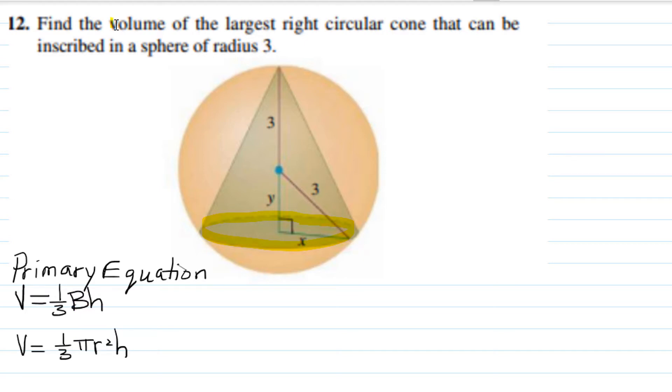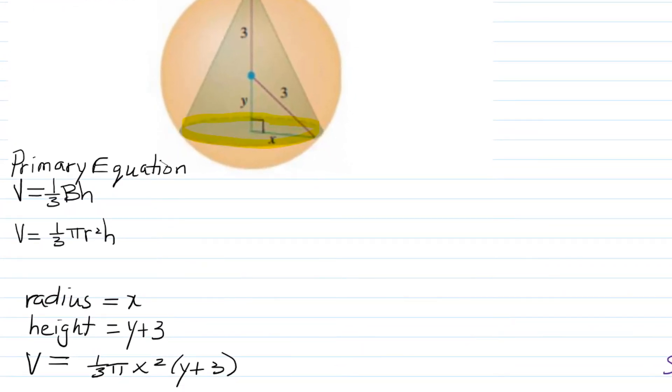Once you have your primary equation, you have to use other information in the problem to rewrite it as a function in one variable. In our diagram, the radius of the base is the value labeled as x, and the height of the cone is the perpendicular height in the center, which is y+3. So we can replace r with x and h with y+3 in our volume formula, giving us V = (1/3)πx²(y+3).